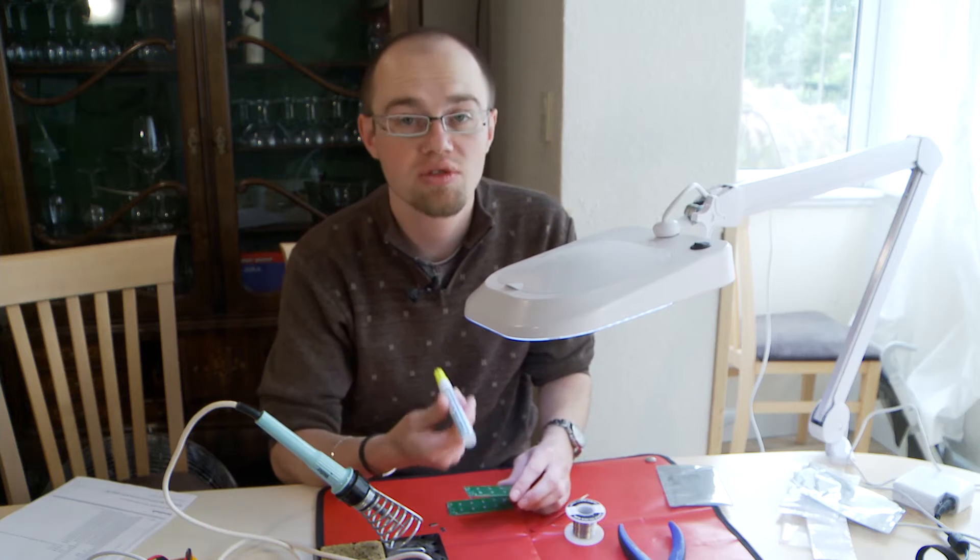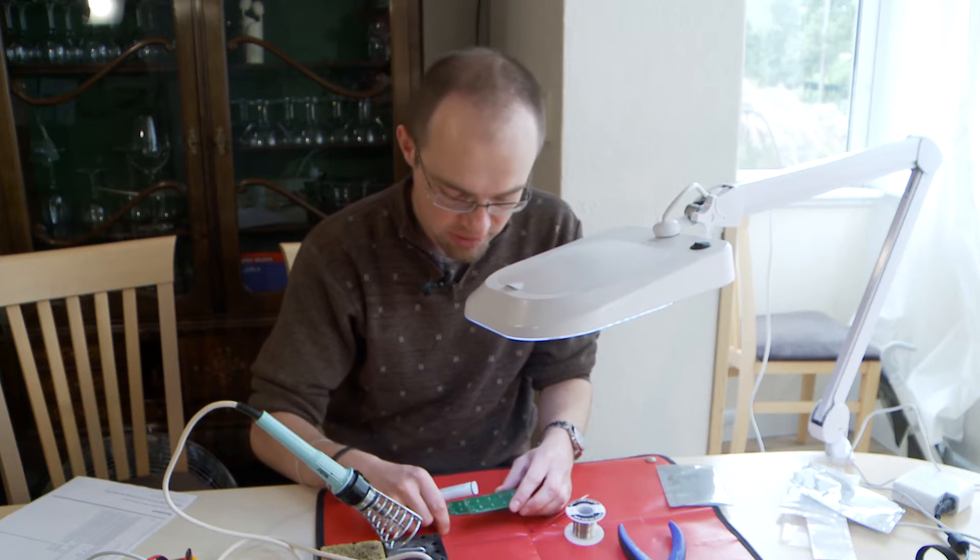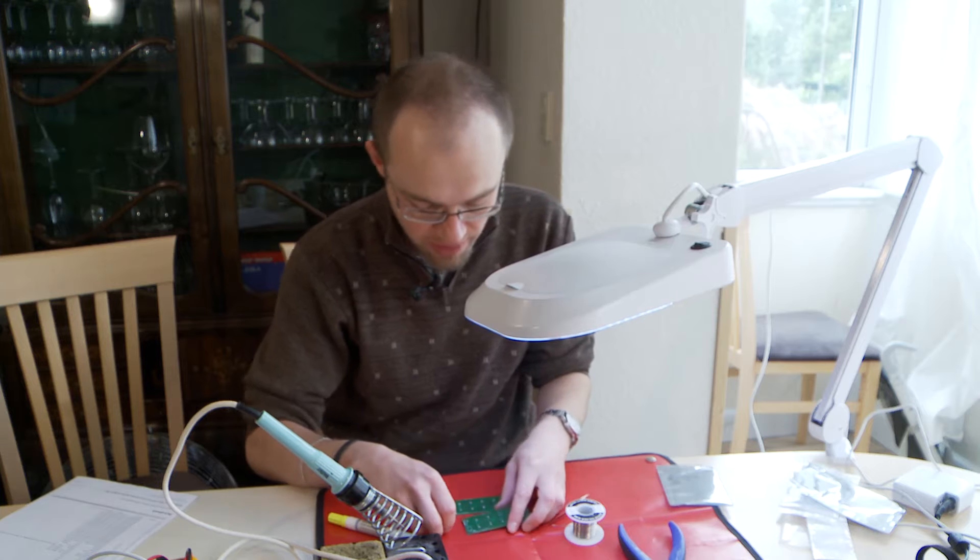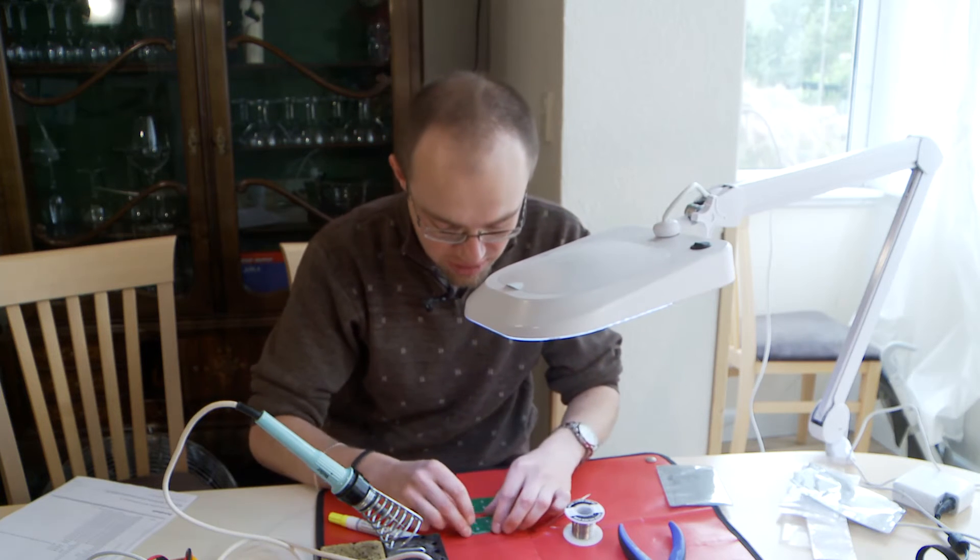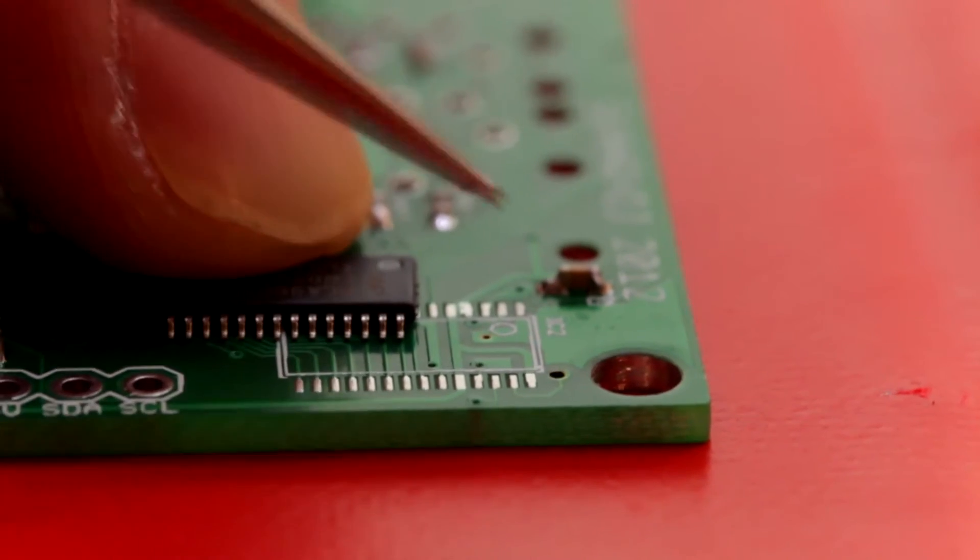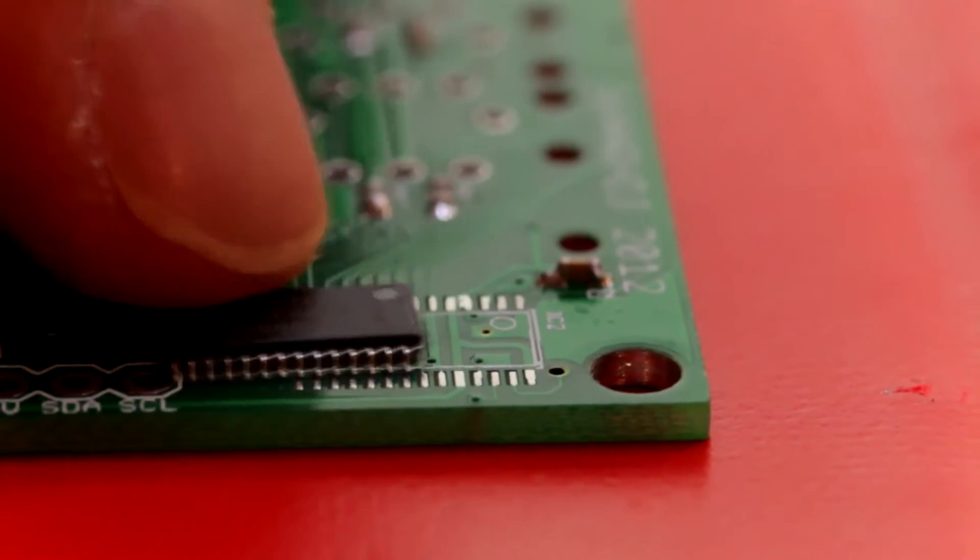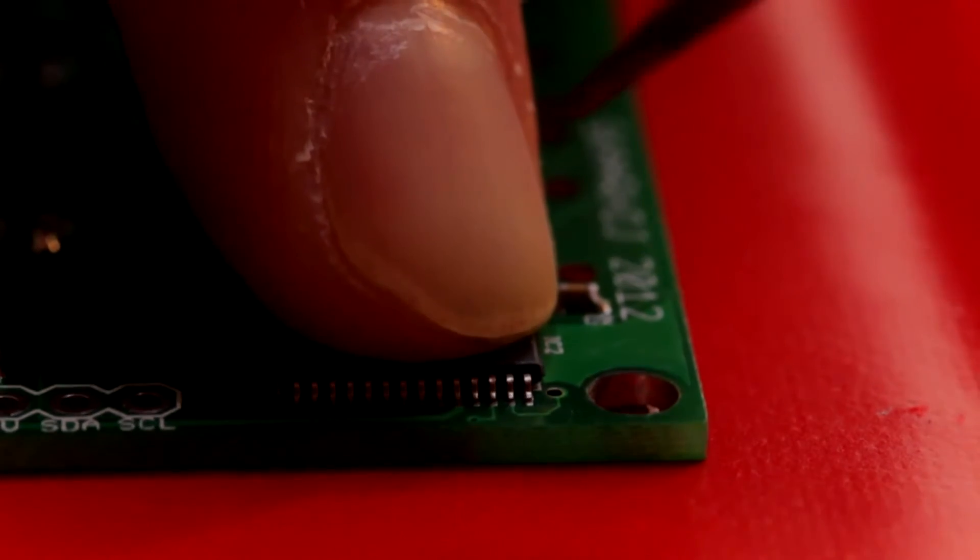It is really important to use flux when you solder the chips because it is much easier. How I solder the chips is basically I place the chip and I align all the legs to the board so I am pretty sure that they fit all.